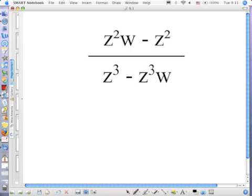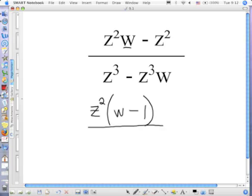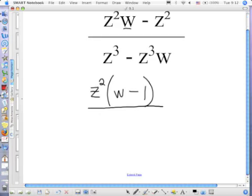How are we going to factor the first one? Take out some Z's. Last hour somebody said it's the difference of two perfect squares. No it's not because of this W. So we can though factor out a Z squared, which leaves me with W minus 1. In the denominator, what can I factor out? A Z cubed, which leaves me with 1 minus W.